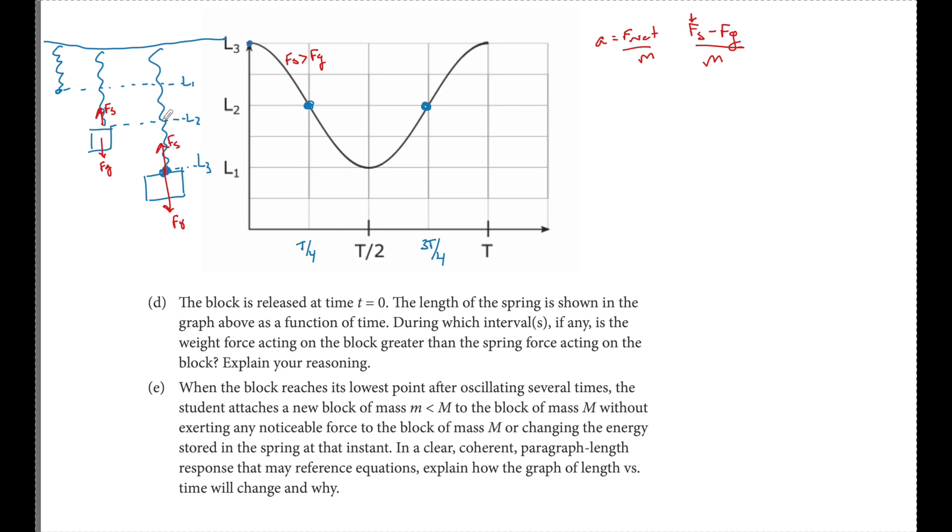Once it gets above L2, the spring force is still moving it up towards L1 in this direction, but the acceleration is negative. So from T over four to T over two, acceleration is negative. Therefore, F net is downward and the downward force is MG. So I think from T4 to T2, FG is greater than FS. That's what they were looking for. So for part D from interval T over four to T over two, FG is greater than FS. And the reason for that is the acceleration in the negative direction. So therefore, F net is downward and the downward force is FG.